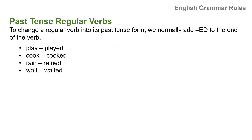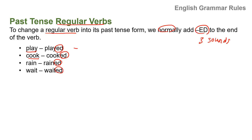Now, past tense regular verbs. To change a regular verb into its past tense form, we normally add -ed to the end of the verb. For example: play → played, cook → cooked, rain → rained, wait → waited. There are three sounds for this -ed ending: the D sound, the T sound, and the -ed sound. We are going to study these three sounds a little bit later.